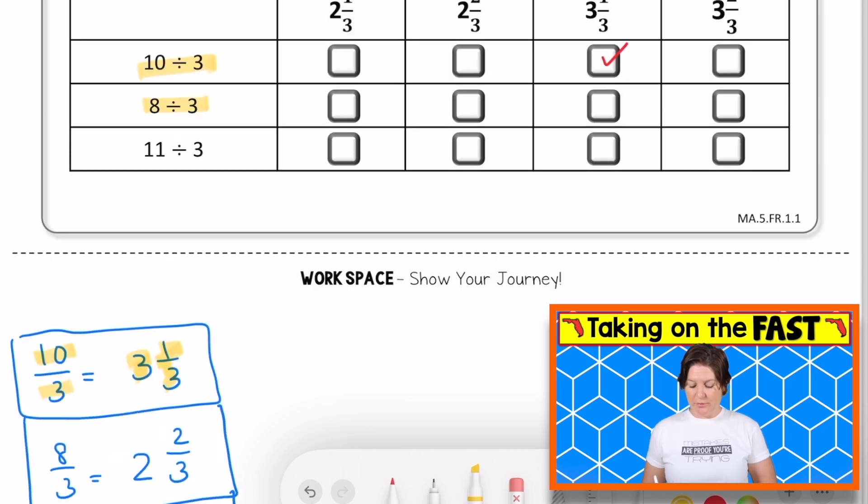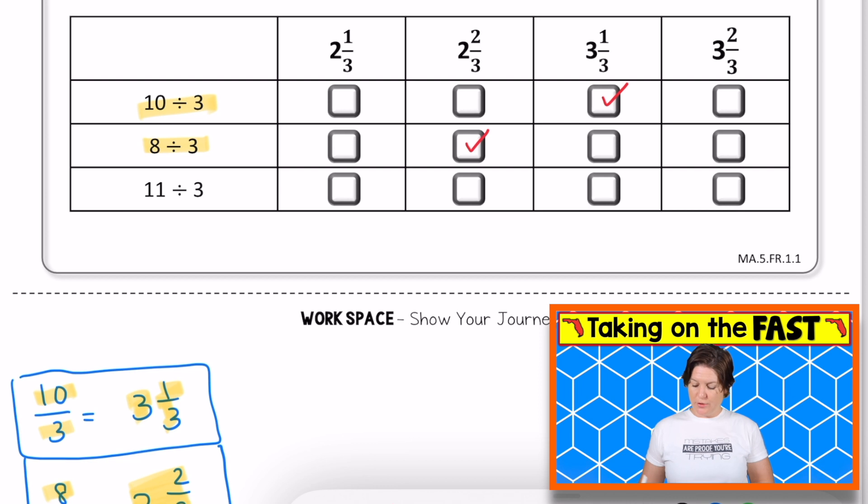For 8 divided by 3, that is the same thing as 8 thirds. We can rewrite that as two wholes and 2/3, two wholes and 2/3.